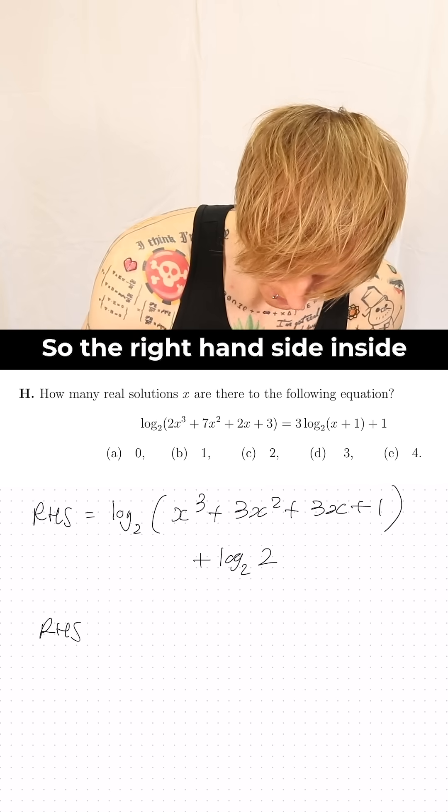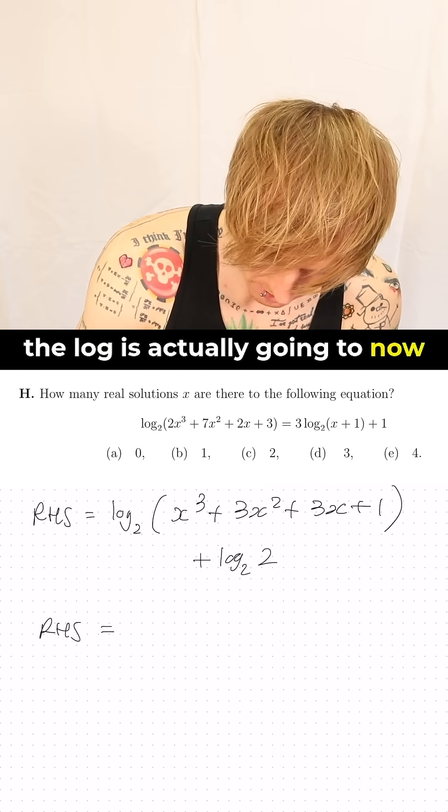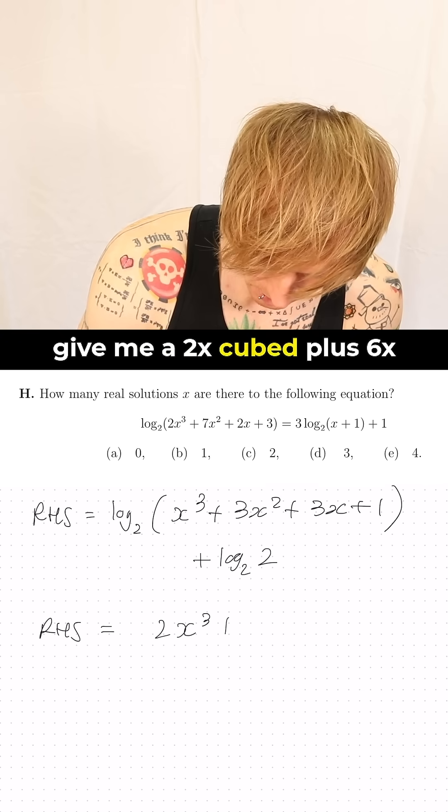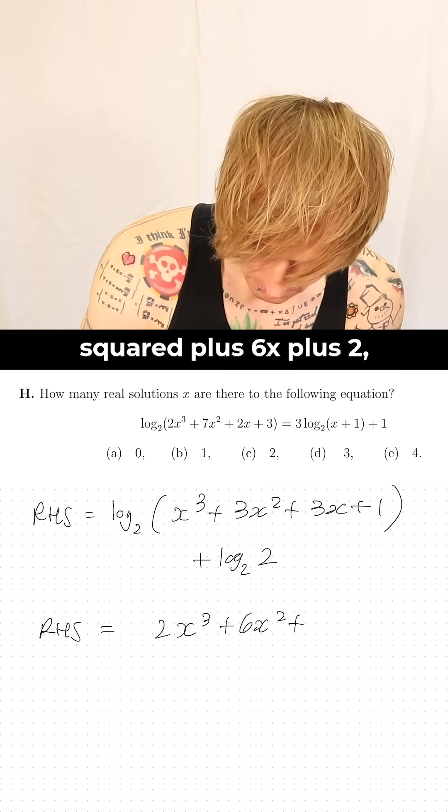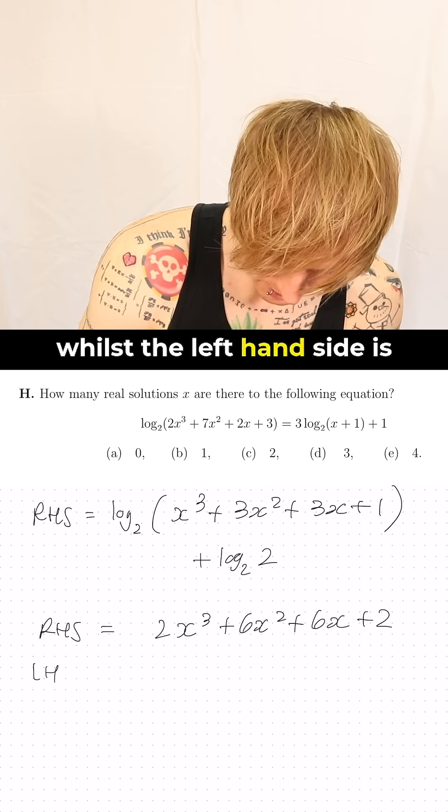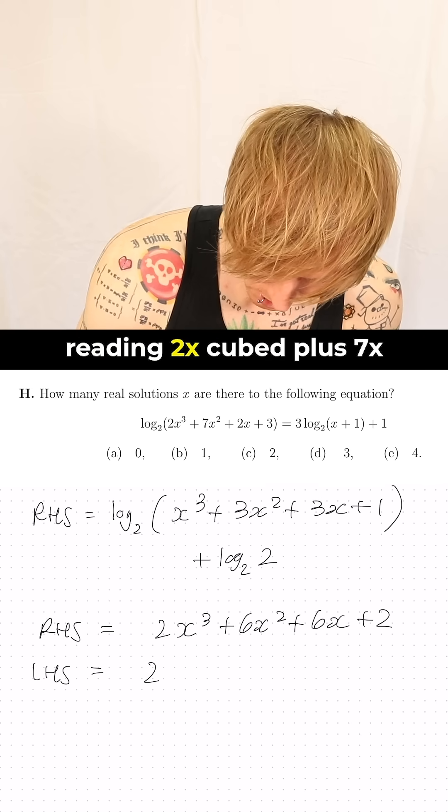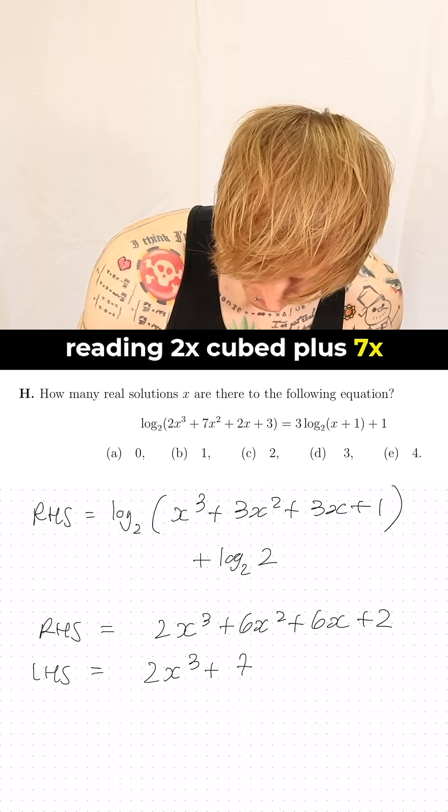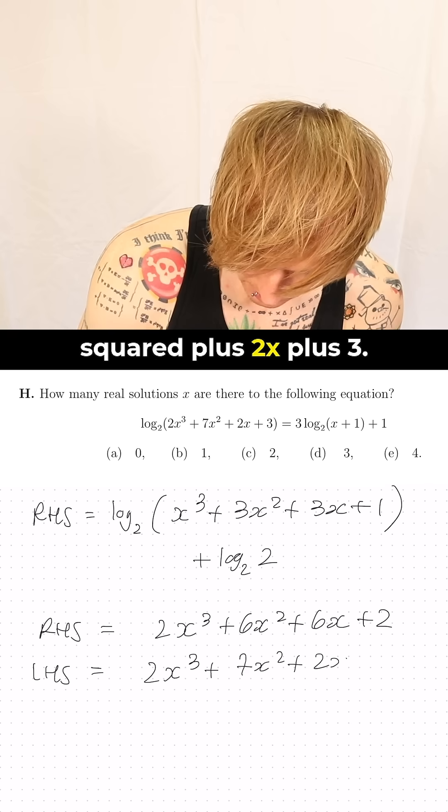So the right hand side inside the log is actually going to now give me 2x cubed plus 6x squared plus 6x plus 2, whilst the left hand side is reading 2x cubed plus 7x squared plus 2x plus 3.